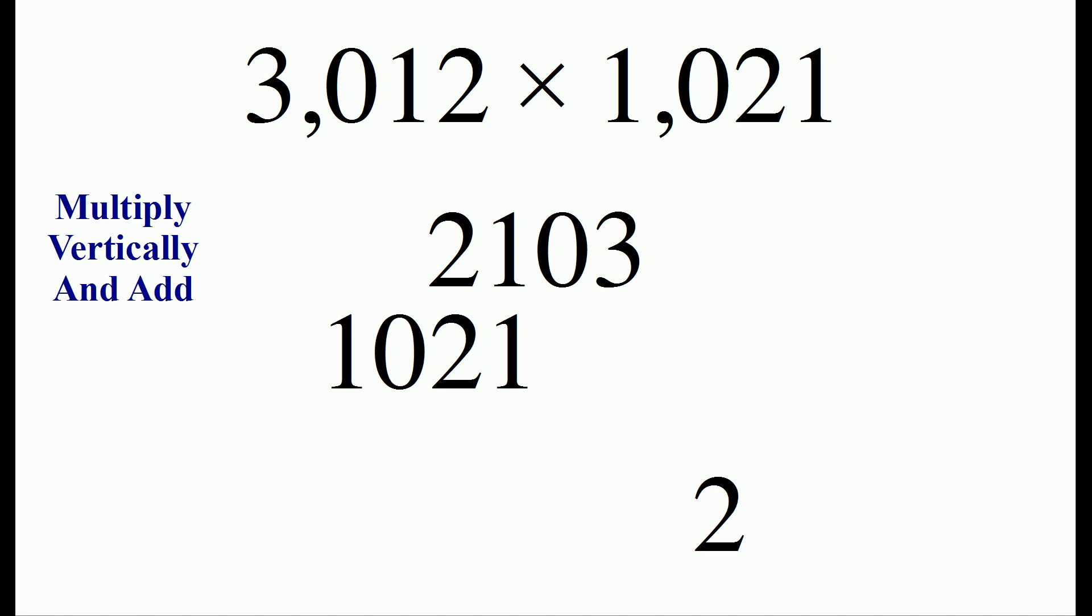We slide it across and now with the digits that are vertically lined we multiply 2 times 2 which is 4 and 1 times 1 which is 1. So adding up 4 and 1 gets us the next digit which is 5.